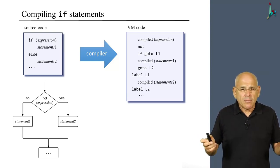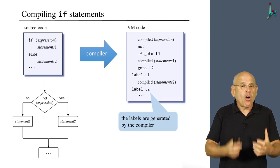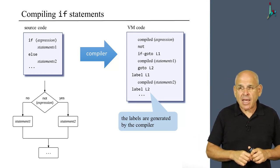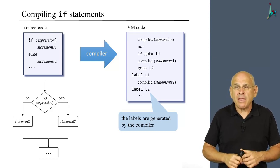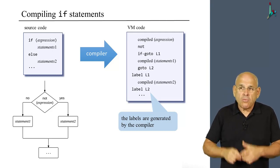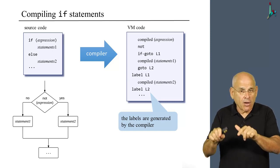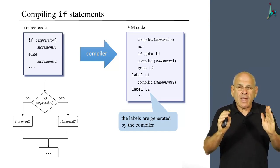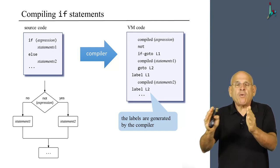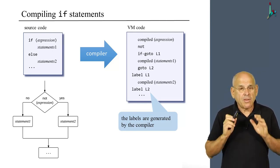Where do these labels come from? The compiler generates these labels automatically. It's the job of the compiler developer to write code that generates these labels cleverly — and by cleverly I mean the labels have to be unique, something I will discuss later. You simply generate the labels and plug them into the code exactly where they belong. Given any if statement, we can generate the code that will compute exactly the same if statement using the VM language only. That's how we handle if.